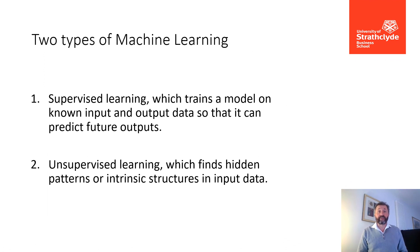There are two things about machine learning that you need to understand: supervised learning and unsupervised learning. Supervised learning is where the computer is trained on a model with known inputs and output data so that it can actually make predictions about the future. Meanwhile, unsupervised learning is where hidden patterns and intrinsic structures in that data are found through statistical techniques.